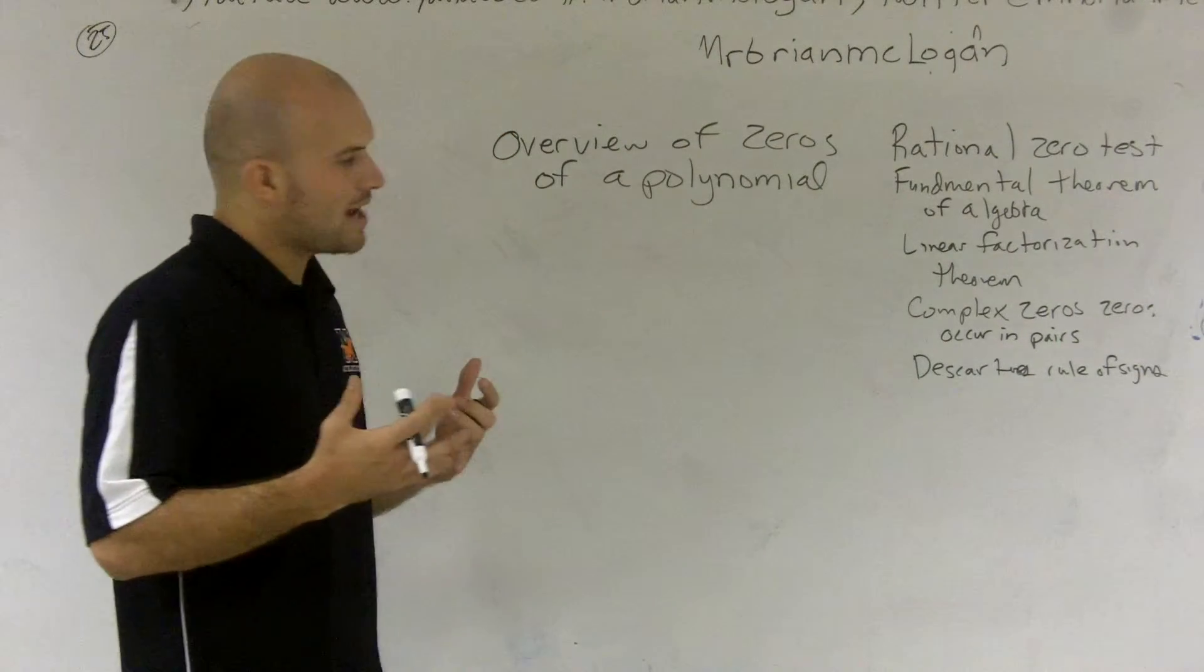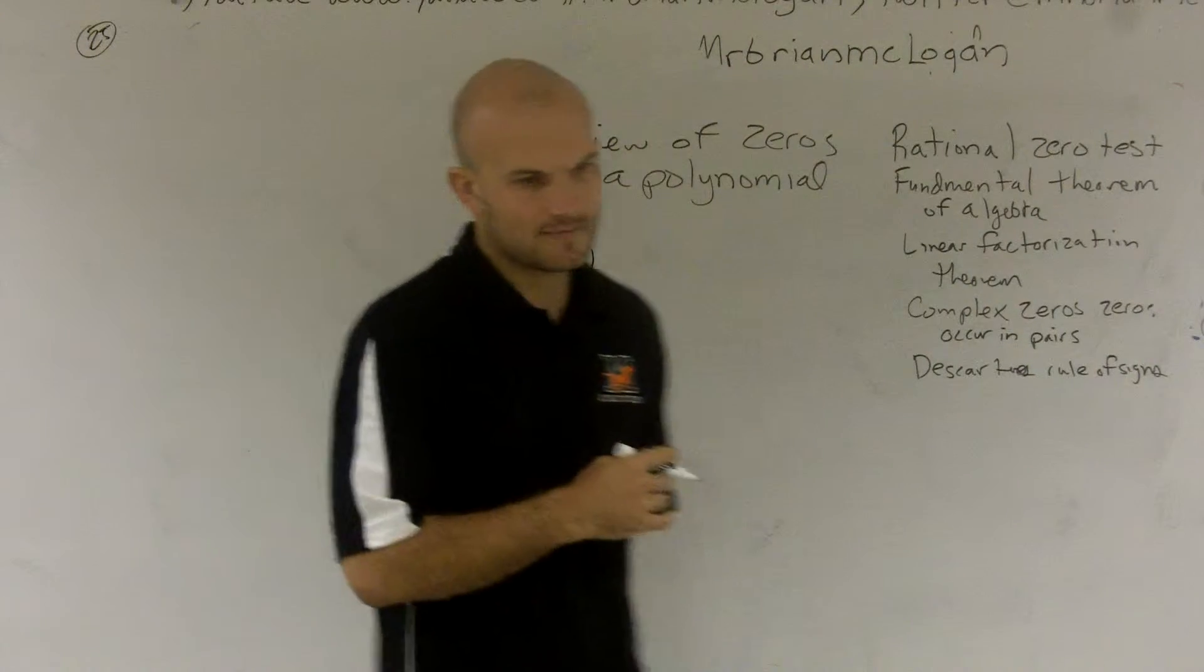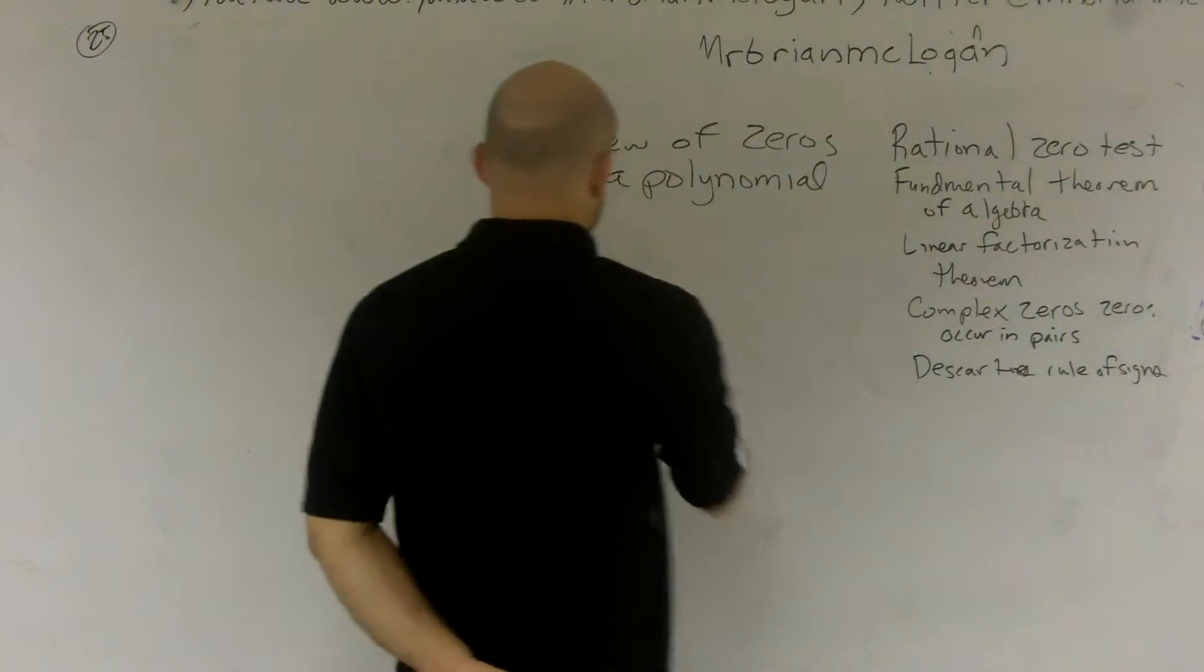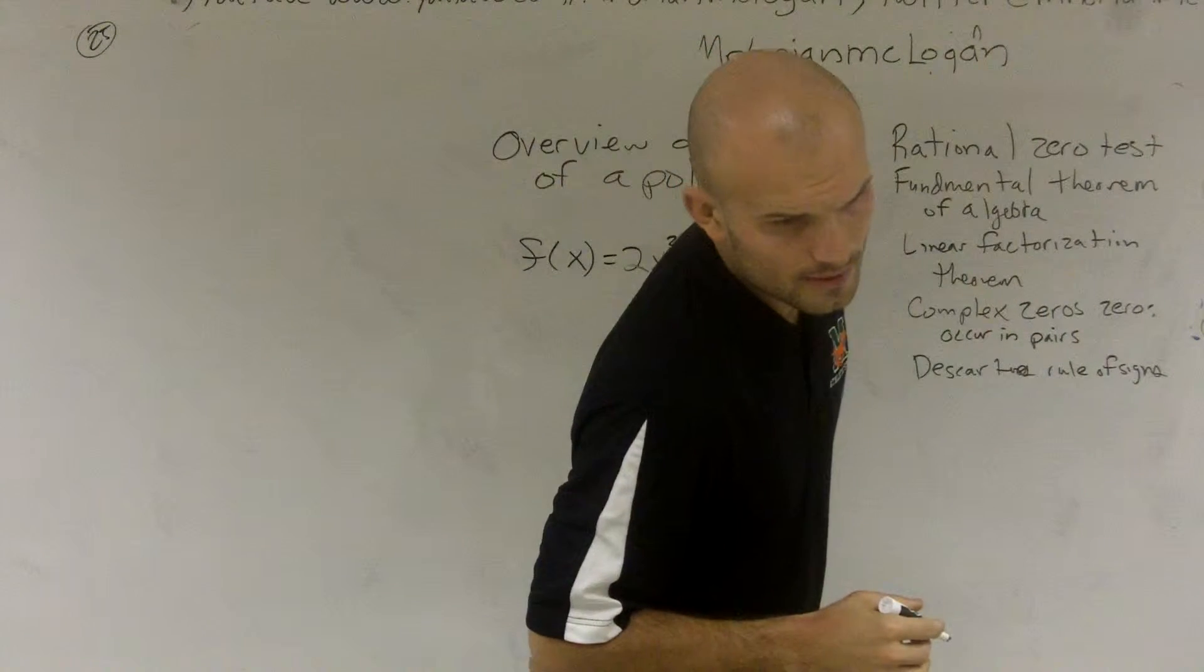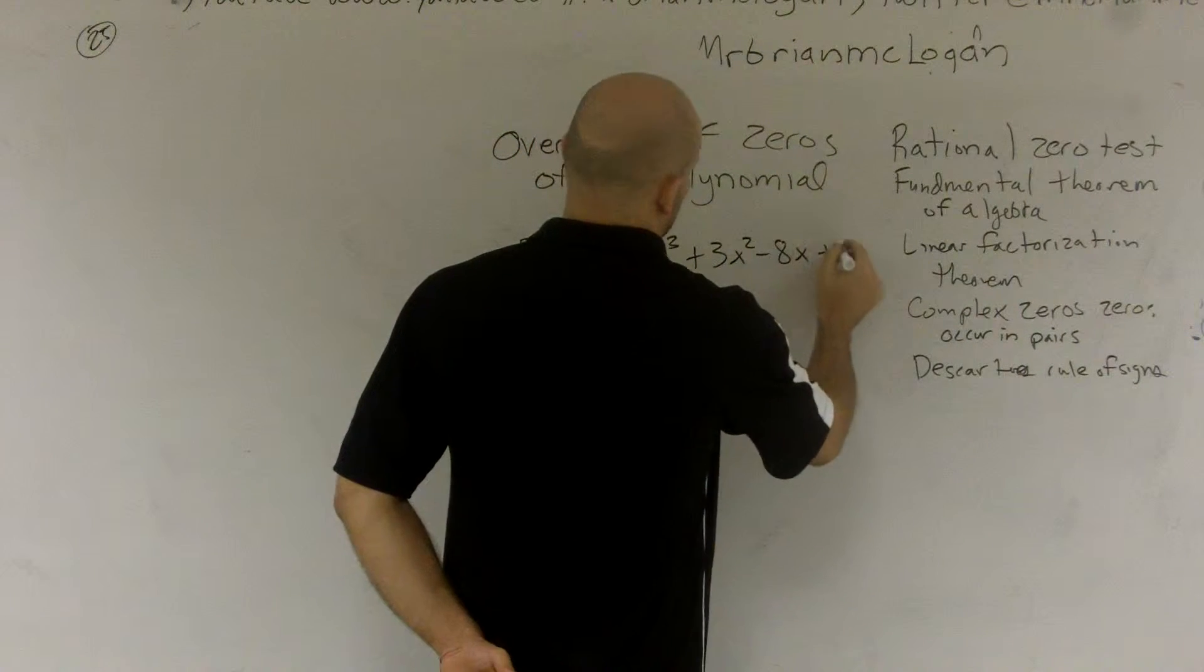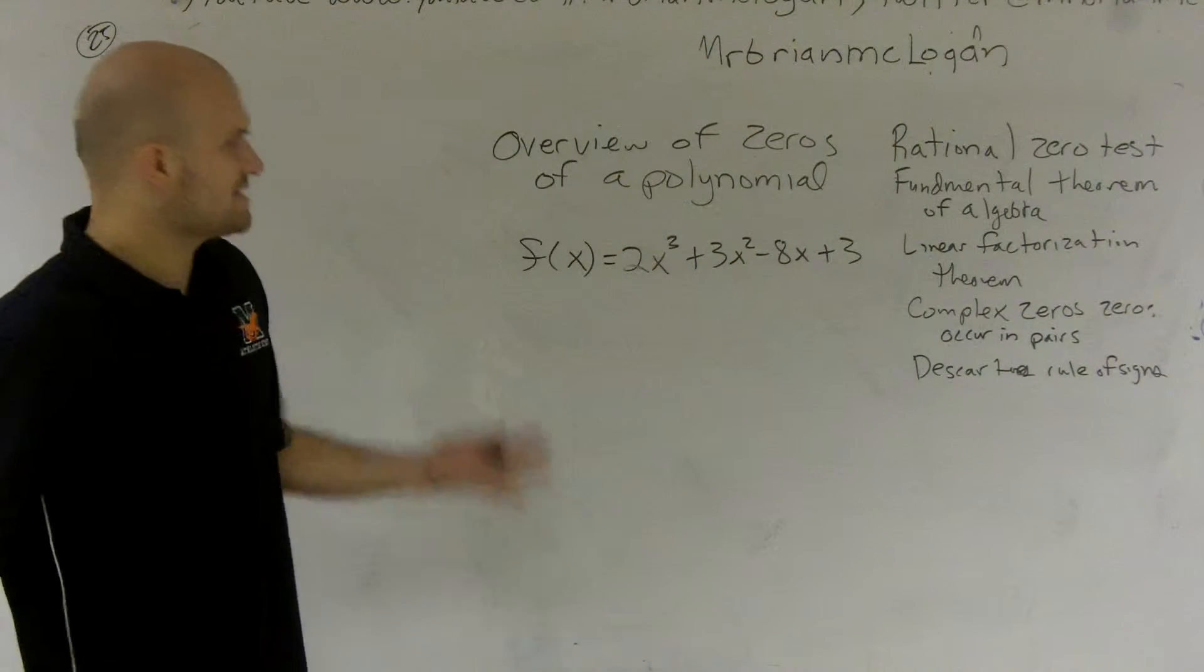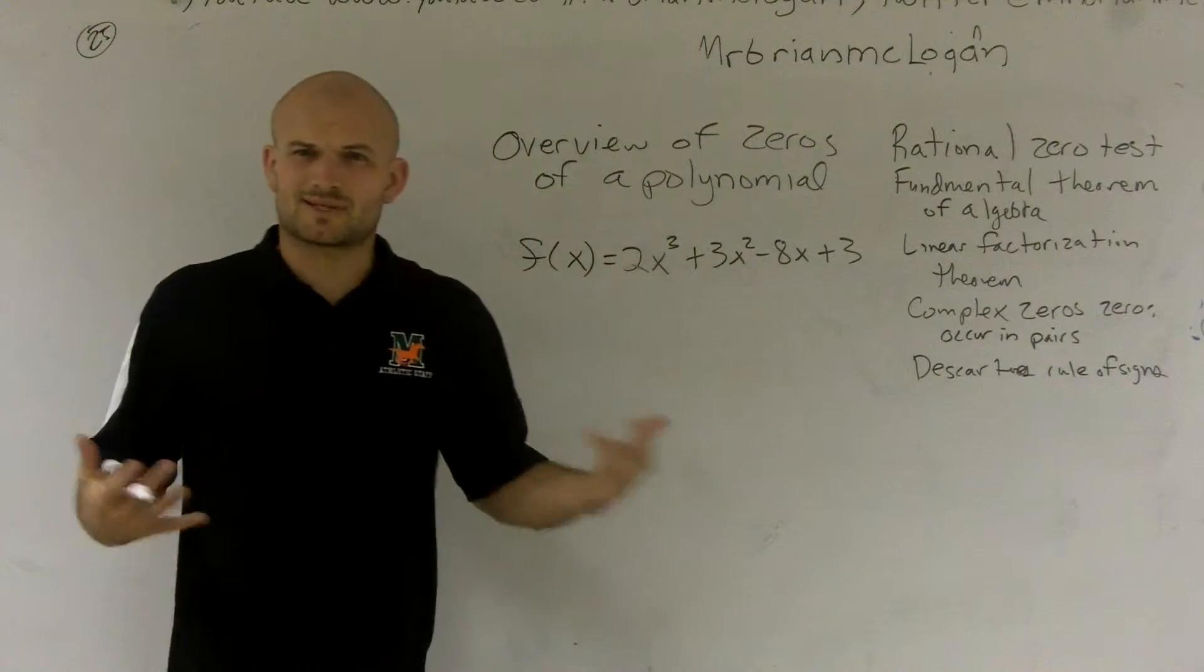But once we get to problems that are a little bit more difficult, for instance, let's say I have f(x) = 2x³ + 3x² - 8x + 3. So there's a lot of things going on with this one. This one's a little bit more difficult to see exactly what the graph is.